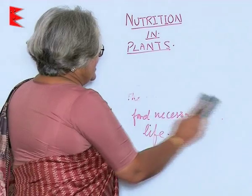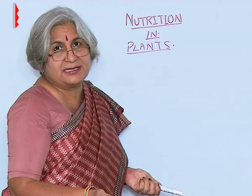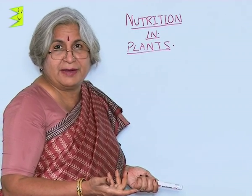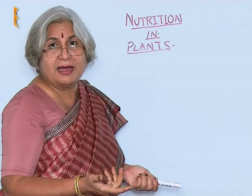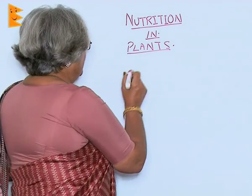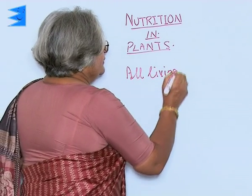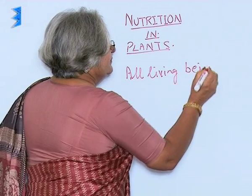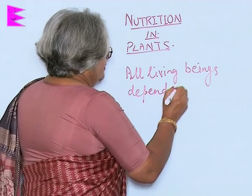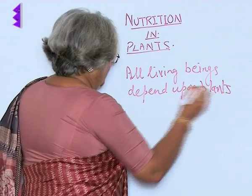Let us take the case of a lion. A lion eats rabbit and rabbit eats grass. So if there was no grass, there would be no rabbits. And if there were no rabbits, there would be no carnivores like lion or tiger. So we can say all living beings depend upon plants for food.